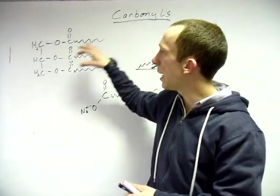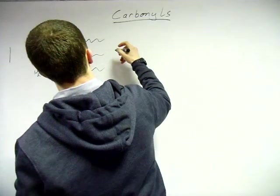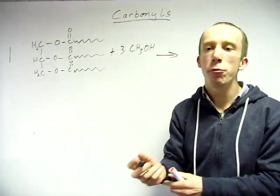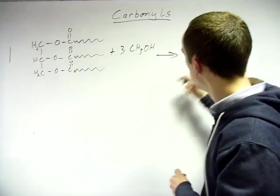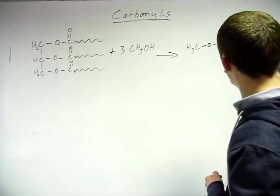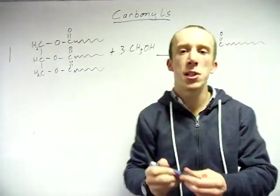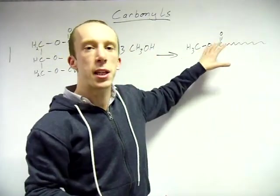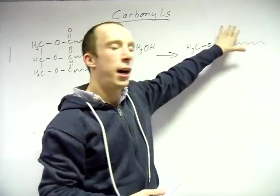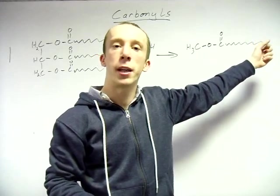You can also react the triester with methanol to get a methyl ester — three of them, one per chain. This methyl ester, obtained for example from rapeseed, can be used as biodiesel. It's typically added to fuels at around two to five percent. Car engines can run on it, and it's a renewable resource from a biological source.